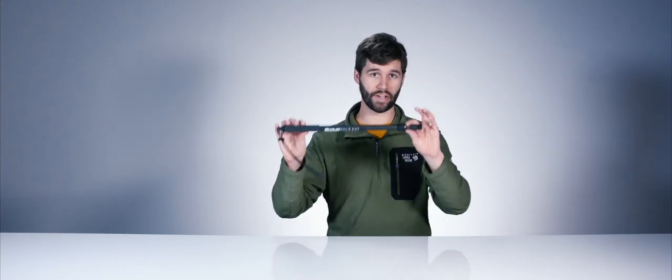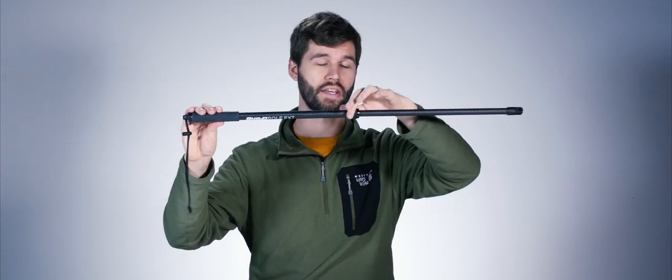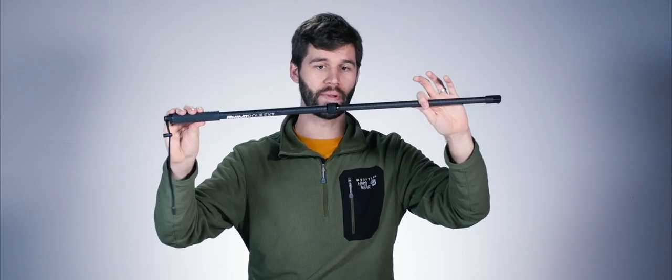If you've accidentally taken apart your Rhino Pole EXT, here's how to put it back together. It's designed to give the locking collar a half twist and then pull the pole to extend it. Snug it back down to secure it in place.